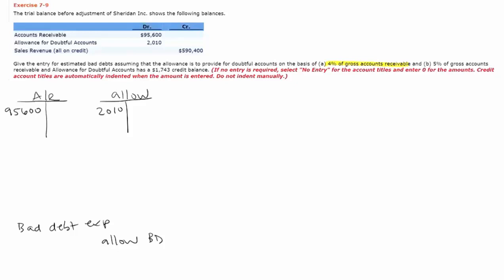The method that's going to be used is not a percentage of credit sales but a percentage of gross accounts receivable, and they're going to use 4%. So we'll times accounts receivable by 4% to get $3,824, and that is the number that we will want our ending allowance account to be.